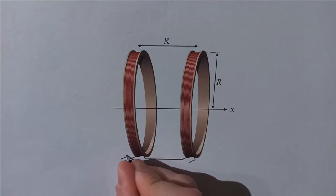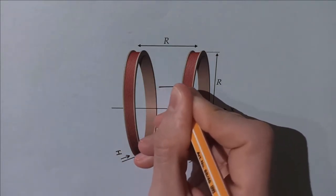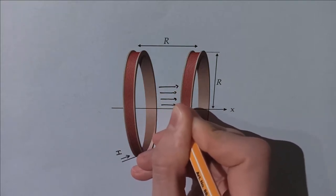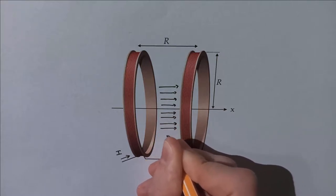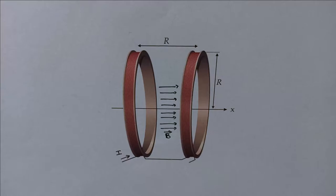Helmholtz coils are pairs of coils in this configuration. When powered with an electric current I, they generate a magnetic field that is uniform on one axis. By varying the current, we can choose the strength of the field.